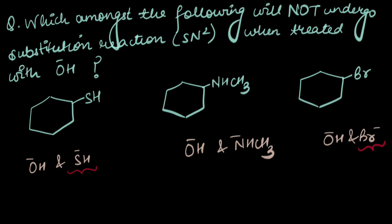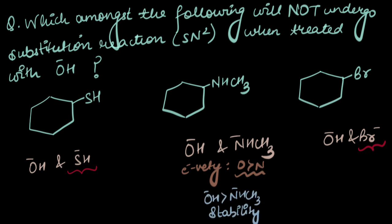Similarly, in the third case, the bromine atom has a larger size than the oxygen atom, so the negative charge is more stable on it. The bromide ion, being more stable than OH⁻, would happily leave. Now for the second case — oxygen and nitrogen belong to the same period, so we use electronegativity. Oxygen is more electronegative than nitrogen, meaning it can keep electron density towards itself better. The attacking nucleophile OH⁻ is more stable than the leaving group NHCH₃⁻, so the leaving group wouldn't want to leave. Therefore, the substrate that does not undergo SN2 reaction when treated with OH⁻ is the second one.